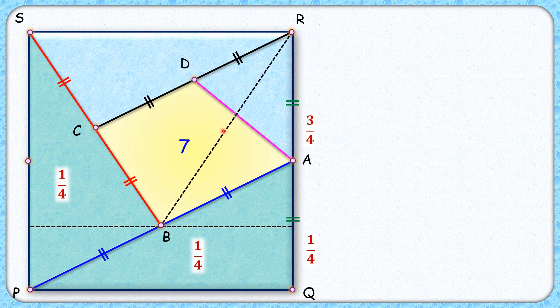Now let's join BR. Now for this triangle BRS, the base is the same and the height is the same. So its area will be half the area of the rectangle. Rectangle area is three-fourths, so this area will be three-eighths.